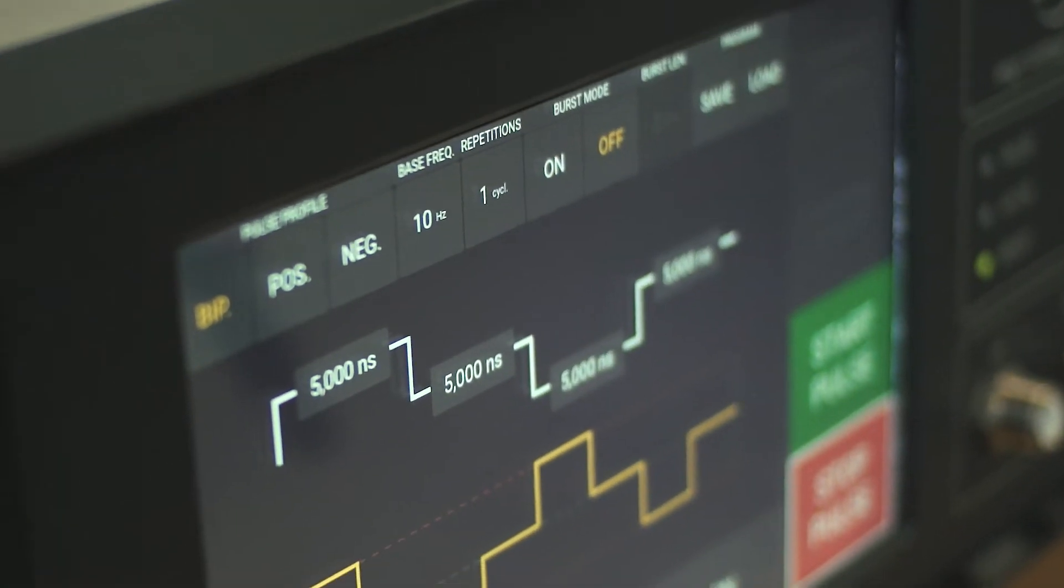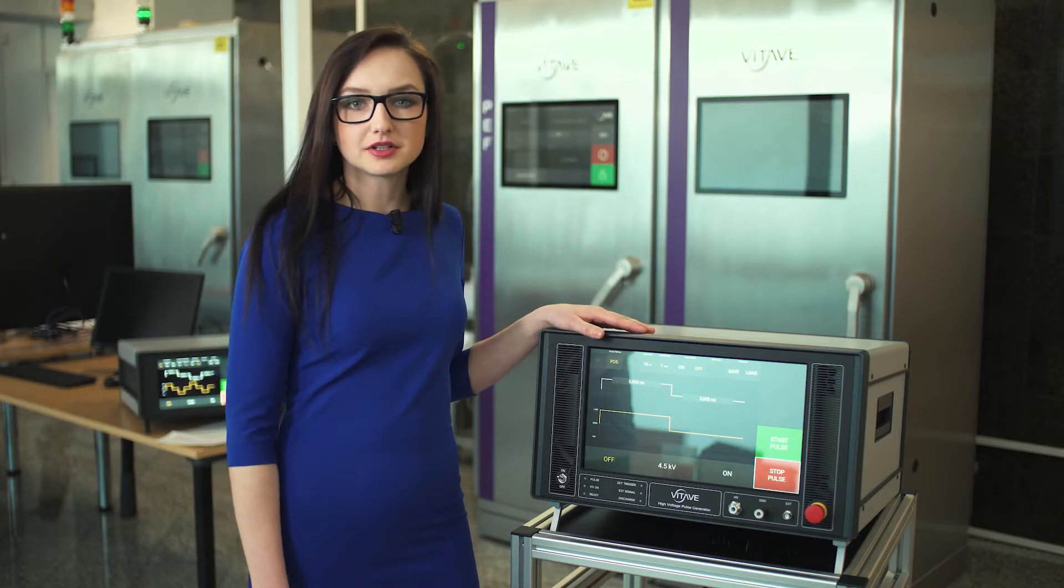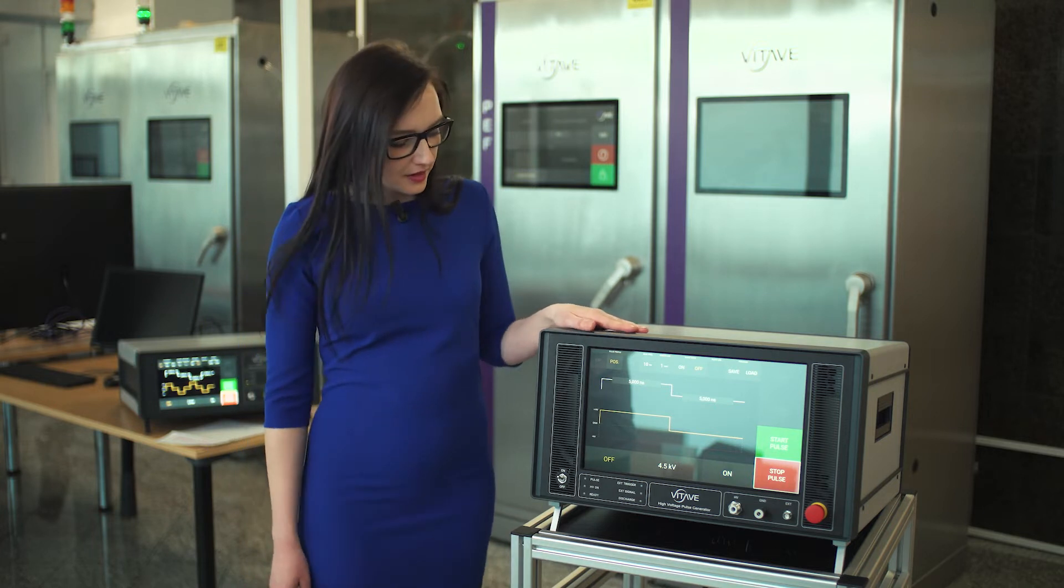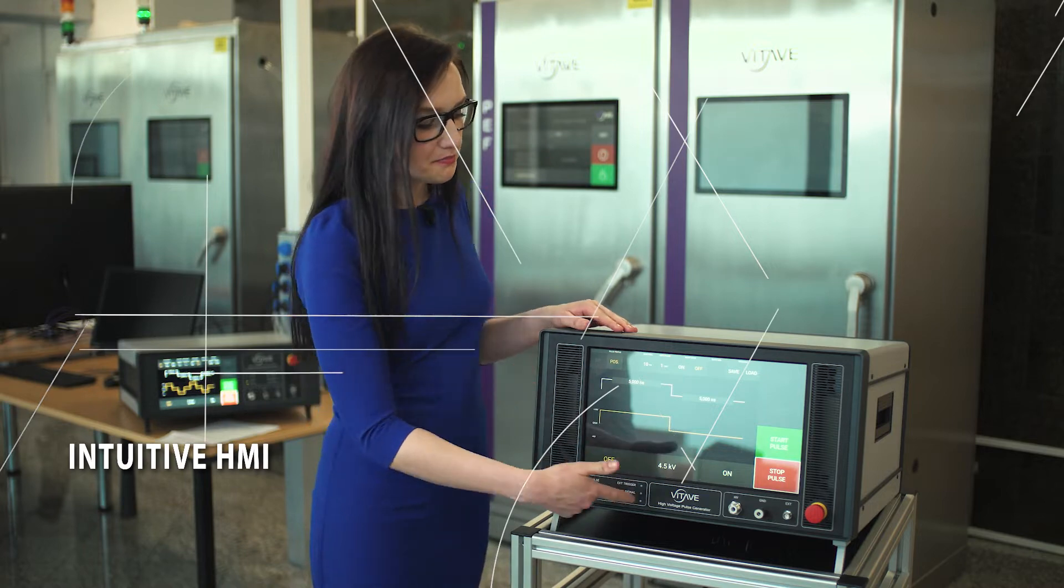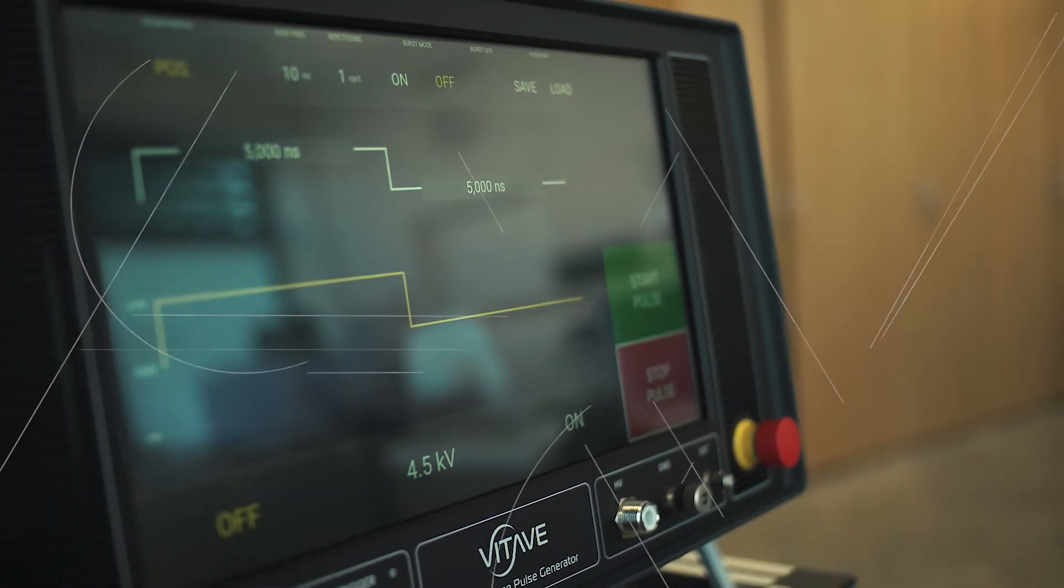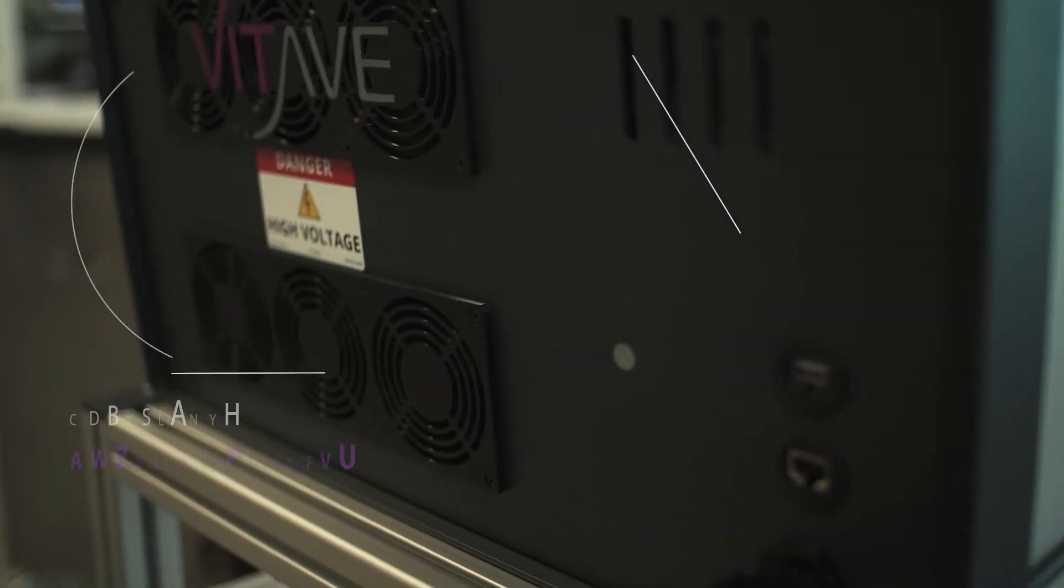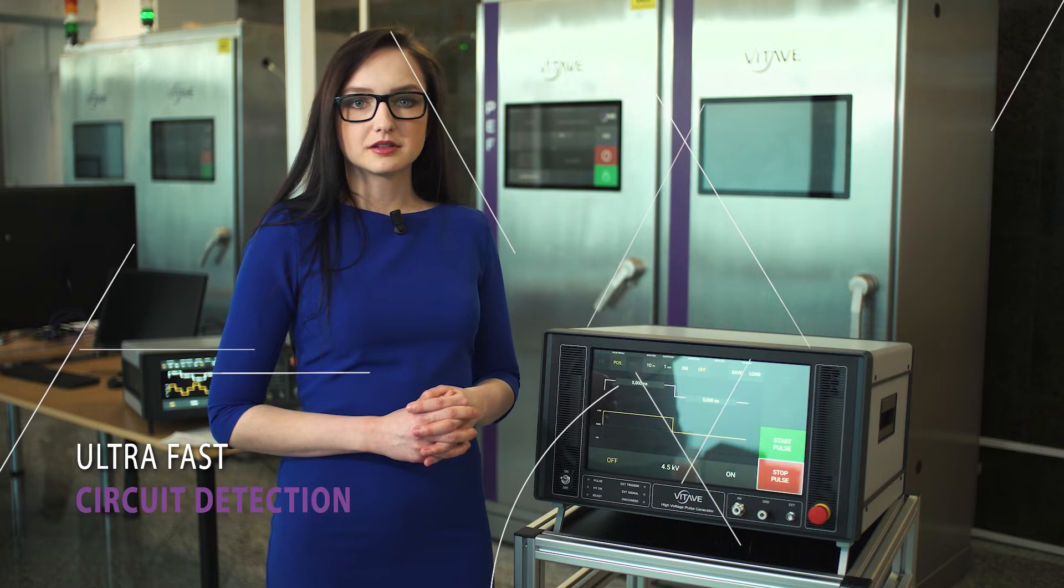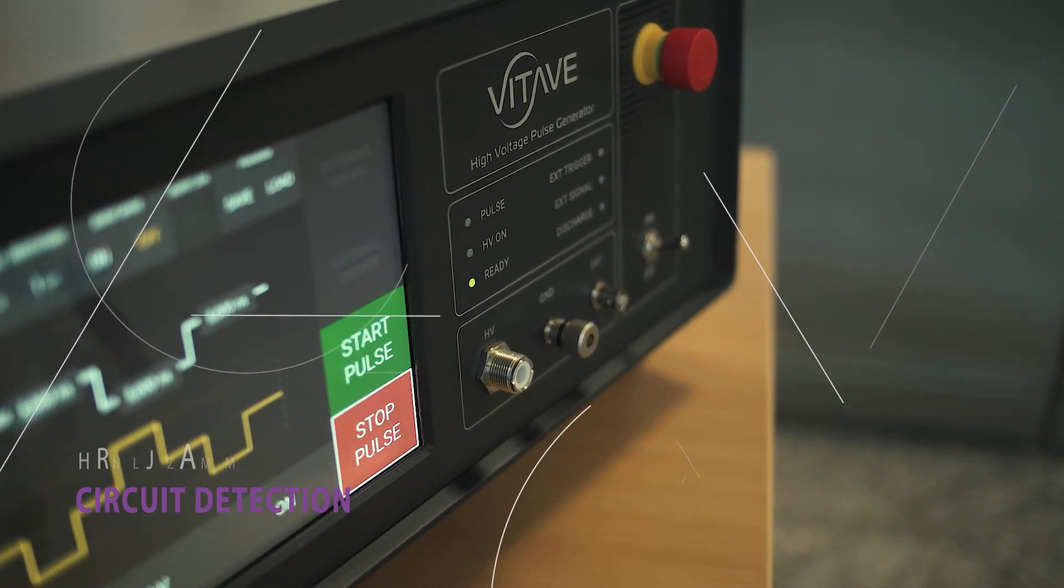Viteve's high voltage pulse generators come in compact size suitable for desktop application with intuitive human machine interface, a big touch screen, and integrated power supply unit allowing easy high voltage power generation out of the box. Each pulse generator comes with ultra-fast short circuit detection which ensures safety for users and equipment.